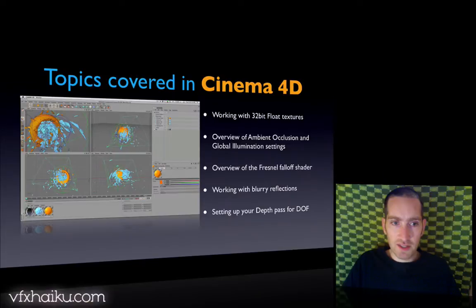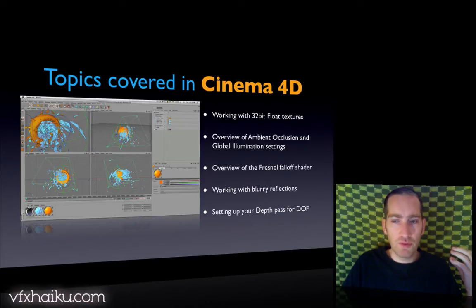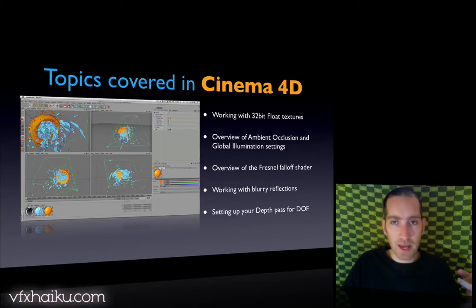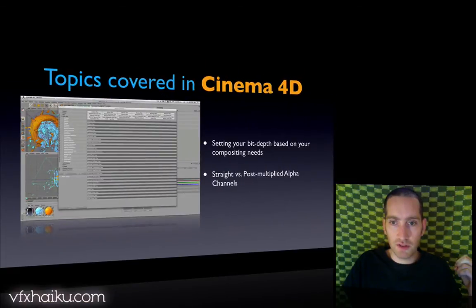Inside each application we cover a whole bunch of different things. Inside Cinema 4D we touch on working with 32-bit float texture maps, go over an overview of the ambient occlusion and global illumination settings, take a look at the Fresnel fall-off shader as it relates to reflections, blurry reflections and how to optimize and work with them properly, and Z-depth passes and how to set up a proper Z-depth pass inside Cinema 4D for blurring in your compositing program.